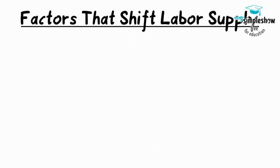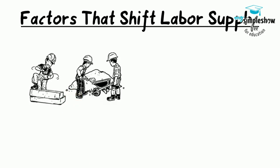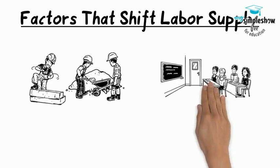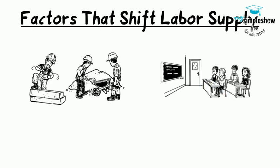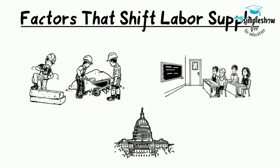Shifts in labor supply. 1. Number of workers: an increased number of workers will cause the supply curve to shift to the right. 2. Required education: the more required education, the lower the supply. 3. Government policies can also affect the supply of labor for jobs. For example, childcare benefits may increase the labor supply of working mothers. Long-term unemployment benefits may discourage job searching for unemployed workers.